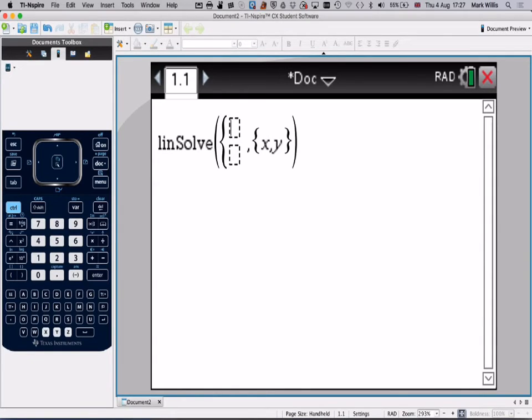And now enter them in as they're written down. So that's 2x minus 3y equals 5, and 5x plus 2y equals 22.